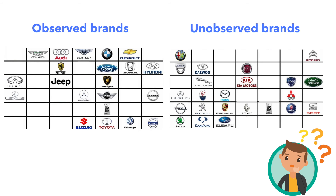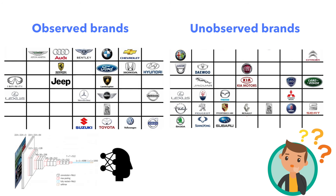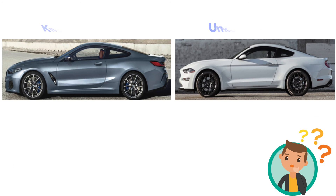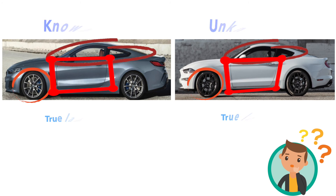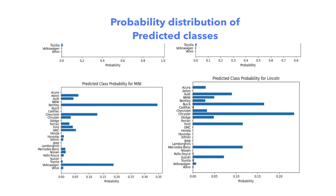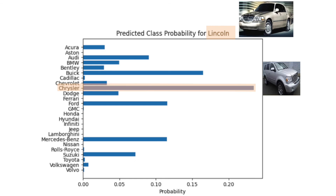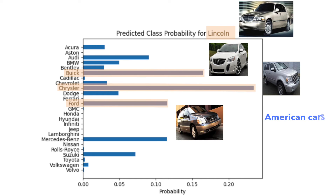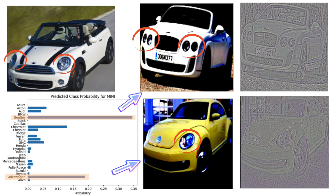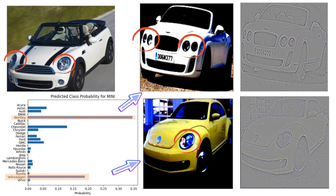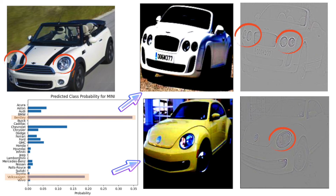You might ask: what about new, unobserved cars? How would our model perform? As a human, you might try to match similar features of cars you have seen to predict the brand. Our model gives very reasonable results. It classifies Lincoln to car brands such as Chrysler, Buick, and Ford, which are all American cars. When our model first sees a Mini Cooper, it predicts Bentley or Volkswagen most of the time, because it learned that Mini Coopers generally have round headlights, and it captured those round headlights from both Bentley and Volkswagen — just as a human would do.